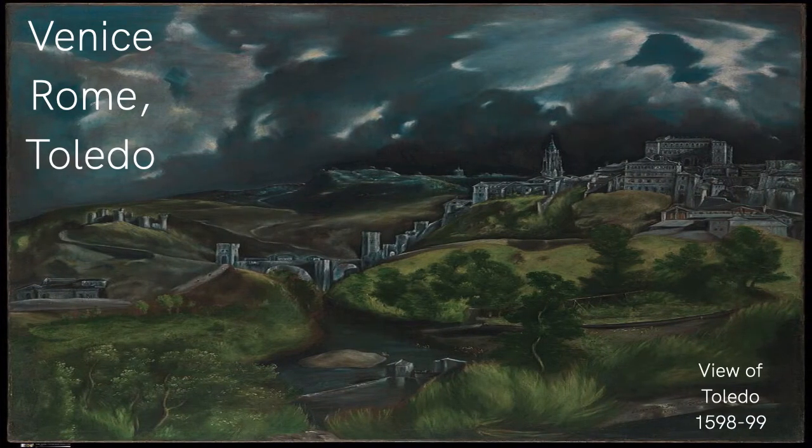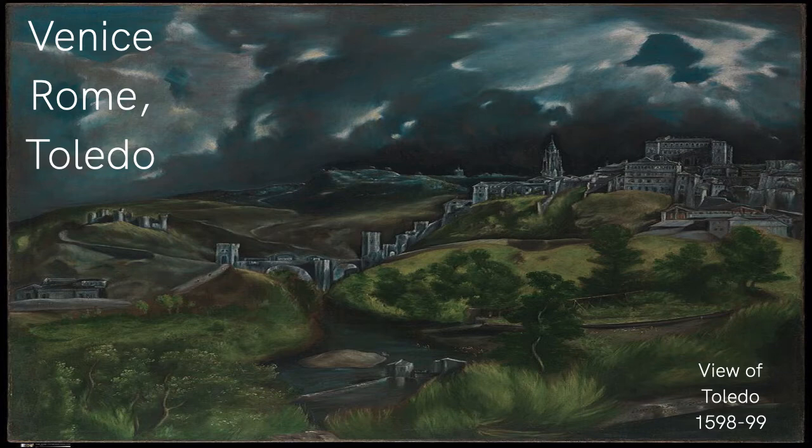In 1577, El Greco moved to Toledo, Spain. This city was the religious center of the ever-growing Spanish Empire, as well as a major metropolitan area. It was also the home of El Escorial, a royal palace and mausoleum complex. Philip II, the king, was looking for artists to help decorate and El Greco submitted his work. Unfortunately for him, Philip was not a fan and declined to have him work further on El Escorial.